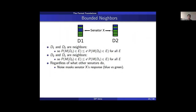Here's a visual example: one pair of neighboring databases D1 and D2 differ only in how Senator X voted — either the blue vote or the green vote. This pair models the situation where the rest of the data has been collected and Senator X is deciding what response to give. Plugging D1 and D2 into the differential privacy equations means Senator X's decision cannot change any output probability by a factor larger than e to the epsilon.